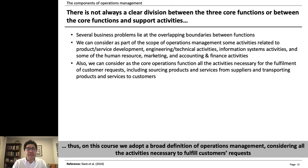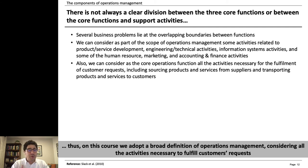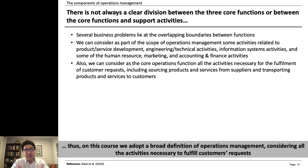There's not always a clear division between the three core functions or between the core functions and support activities, because many business problems are at the boundaries between functions. For example, operations and finance are particularly interested in working capital, which comprises cash, accounts payable, accounts receivable, and inventory. It's hard to say whether a decision that impacts both finance and operations belongs to one silo or the other — they are actually intertwined.